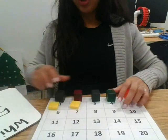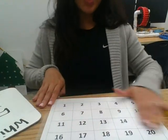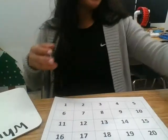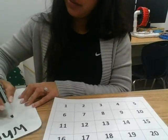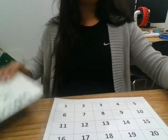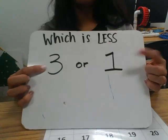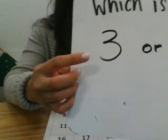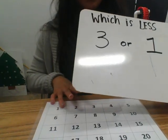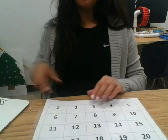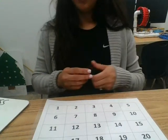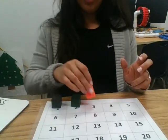Alright, we're going to do 2 more. I'm going to clear off my mat — make sure you do so too. Our next numbers we're going to look at are 3 or 1. Which one is less, 3 or 1? First we're just going to focus on the number 3. Find 3 on your number mat: 1, 2, 3.